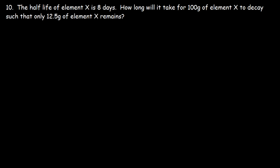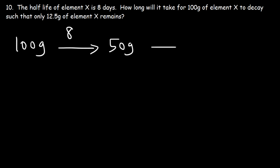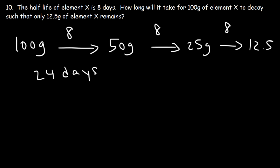Number ten: the half-life of element x is 8 days. How long will it take for 100 grams to decay so that only 12.5 grams remain? Conceptually: starting with 100 grams, after 8 days there are 50 grams, after another 8 days there are 25 grams, and half of 25 is 12.5. So it takes 3 half-lives, or 8 times 3, which is 24 days, for element x to decay to 12.5 grams.